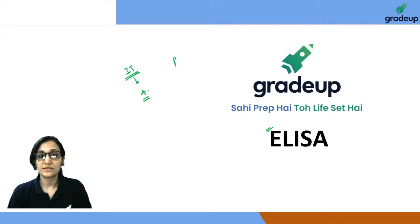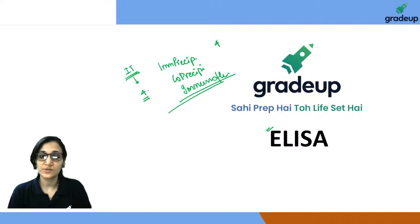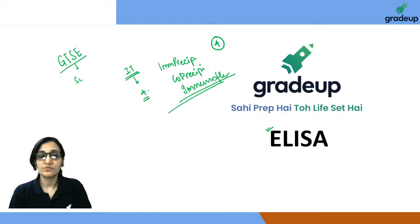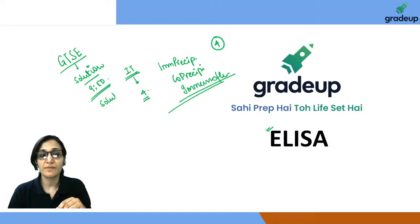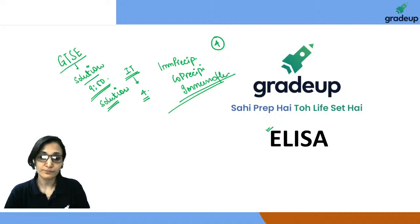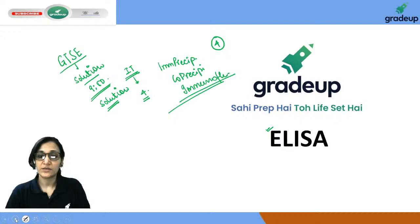We are going to cover immunoprecipitation, co-precipitation, and immunofluorescence — four topics this week. After that, the GTSE exam is coming up. I think all students have registered for GTSE. The solution for the GTSE paper will be discussed in Saturday's 9 PM class. This was a little information about the upcoming week. Let us start the class.